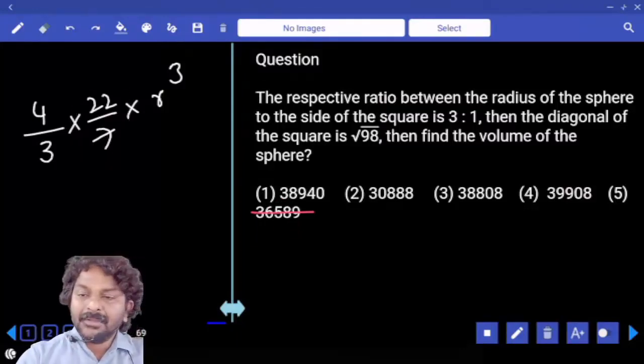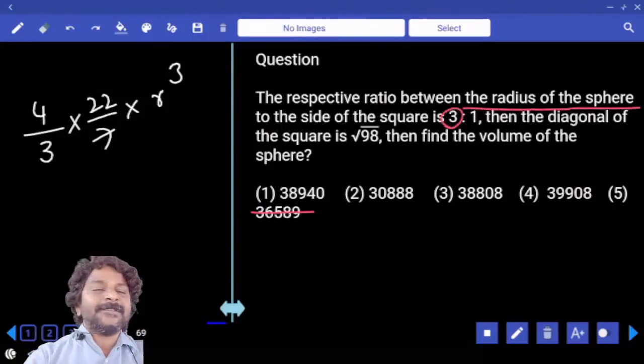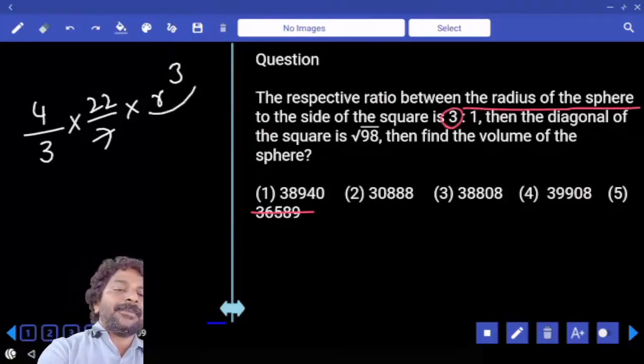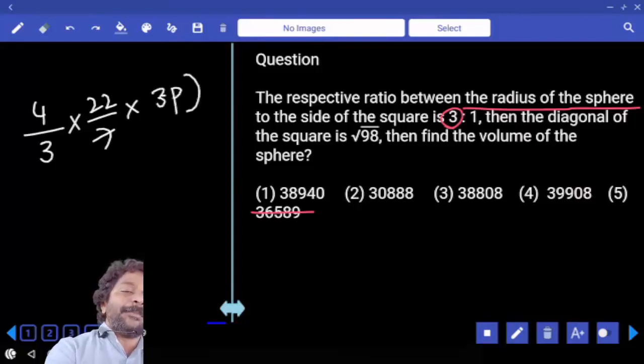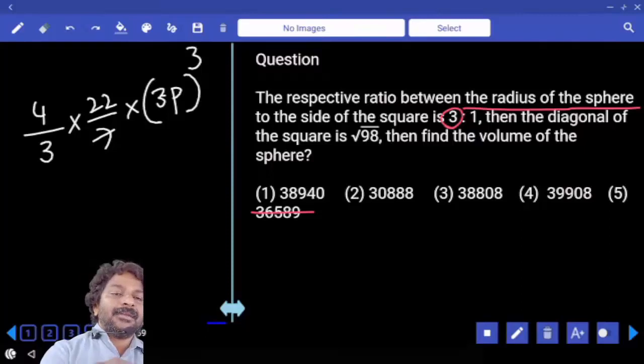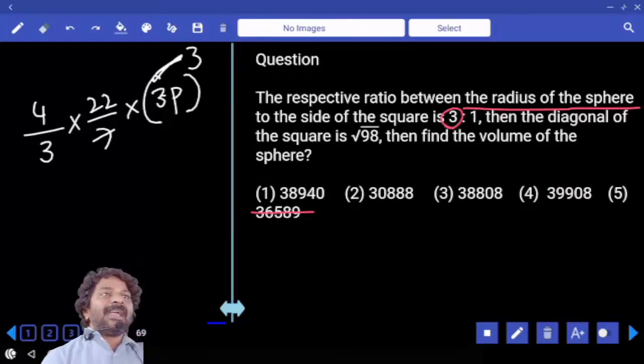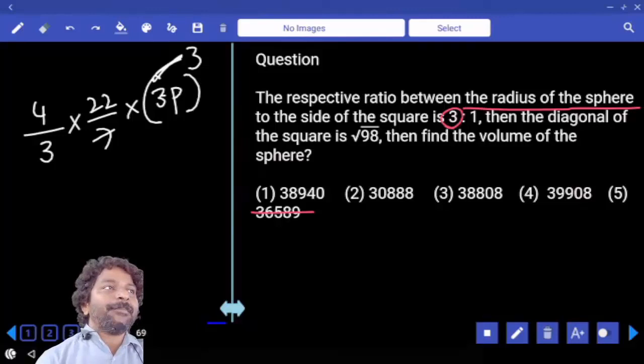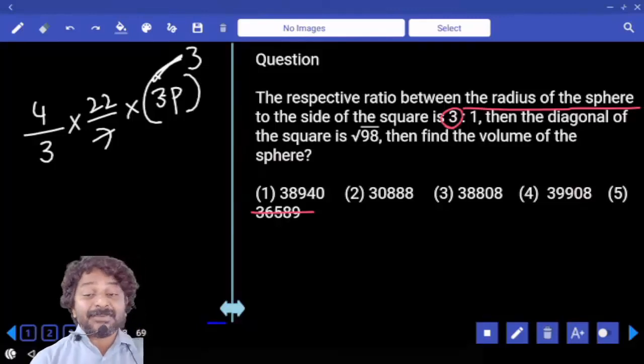Now, radius of the sphere is how many parts? That means, r cube value, here we are going to get 3p whole cube, right? Come on. 3 cube value we have? Yes. And in denominator, 1, 3 is available? Yes. That can be cancelled. And 3 power? Yes. How much is left? 2. 2. 3 power 2 is left. That means, answer must be 9 multiple also? Yes.